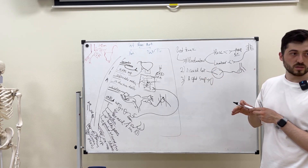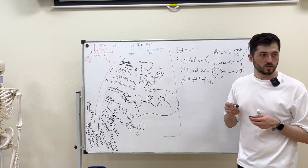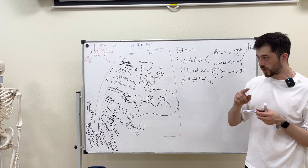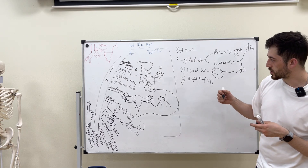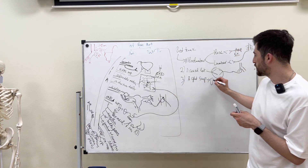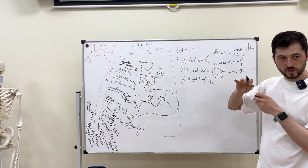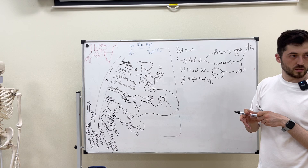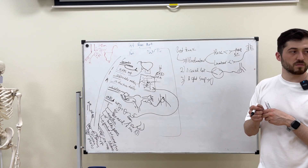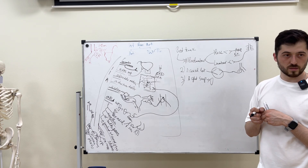We also have the inferior gluteal artery, which passes through the infrapiriform foramen and supplies the muscles in that region. Additionally, there are cremasteric branches to the cremaster muscle from the iliac arteries.